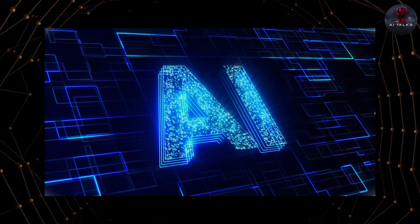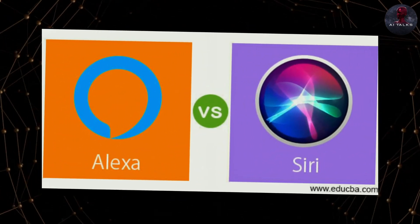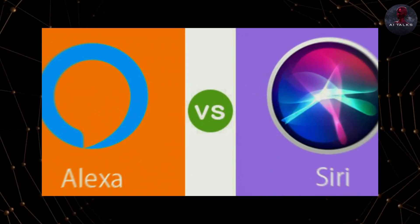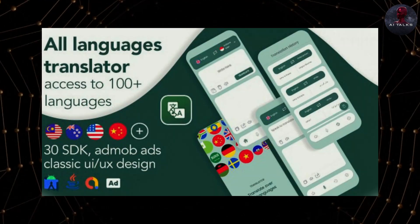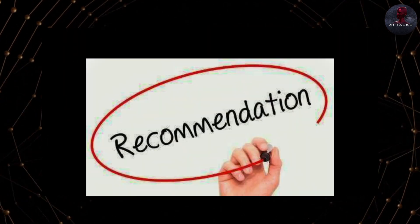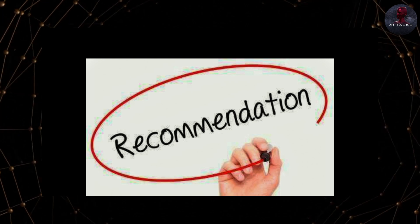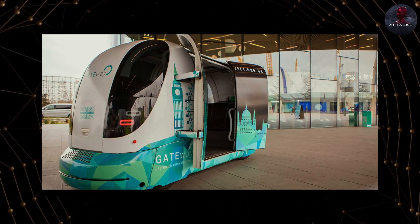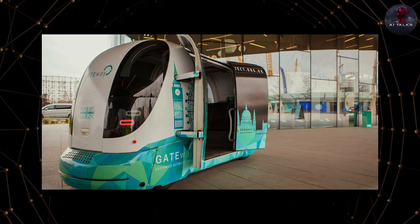Common examples of Narrow AI include virtual personal assistants like Siri or Alexa, image recognition systems, language translation apps, recommendation algorithms used by streaming services, and autonomous vehicles designed for specific environments.